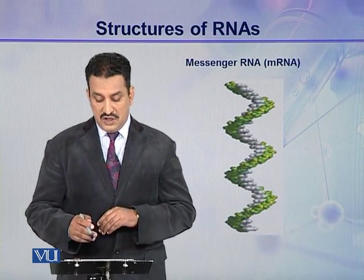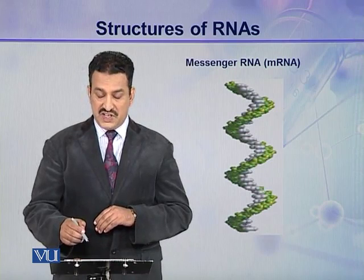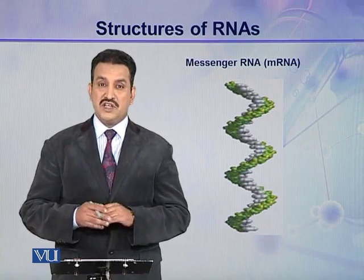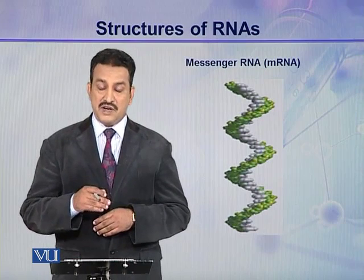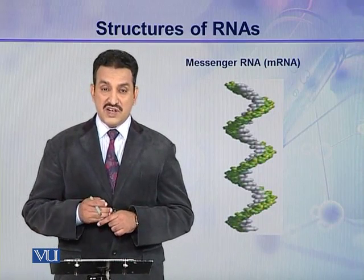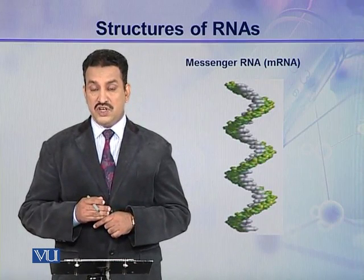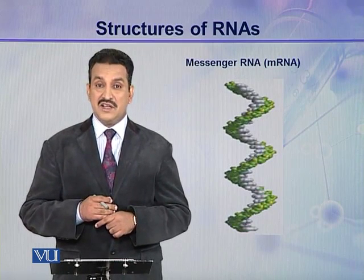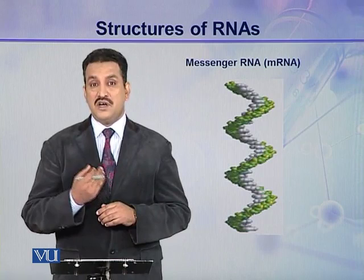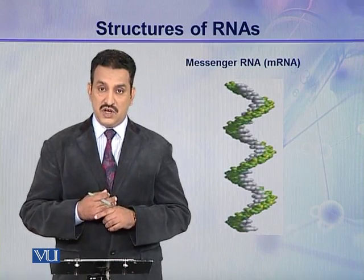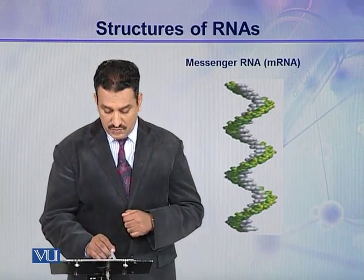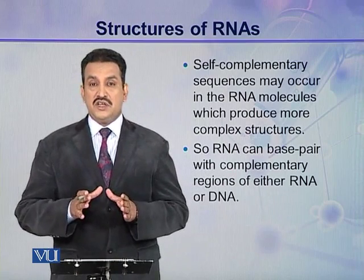In this structure, the white line represents the nitrogenous bases while the green line represents the backbone consisting of ribose sugars and phosphoric acids. This is a single stranded helical structure, in contrast to the double helical structure of DNA, where two strands are helically coiled around an imaginary axis. Here, only a single strand is coiled around an imaginary axis to form a helix.